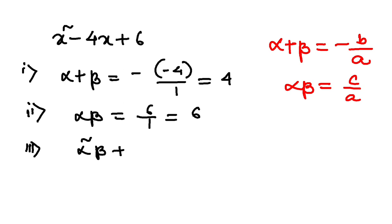So you have alpha squared beta plus alpha beta squared. What you can do here, you can take alpha beta common, you are left with alpha plus beta, isn't it? So alpha beta is 6 and alpha plus beta is 4. So 6 into 4 is 24.